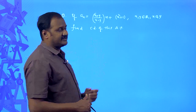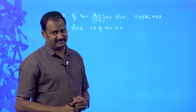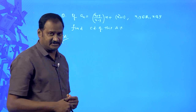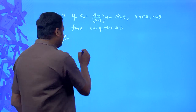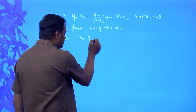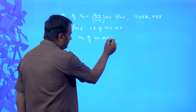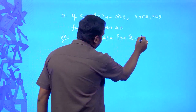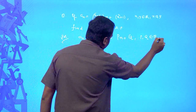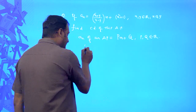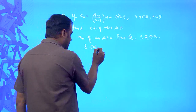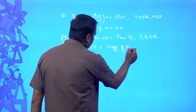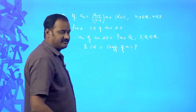So if this is the nth term of the arithmetic progression, then what is the common difference? When you observe the formula for the nth term of an arithmetic progression, we discussed in the previous class that aₙ would be of the form p·n + q, where p and q are any two real numbers, and the common difference of this arithmetic progression is the coefficient of n, which is p.